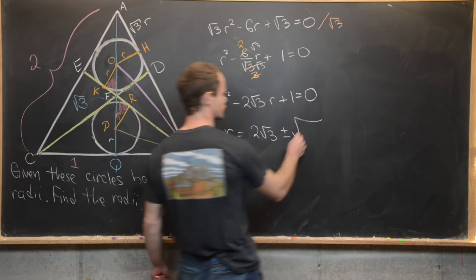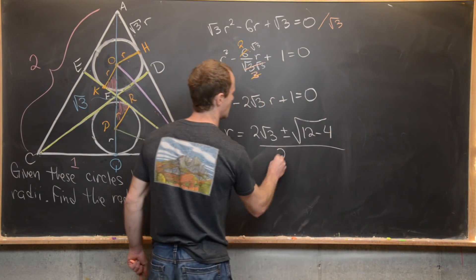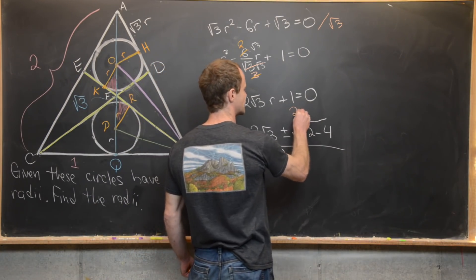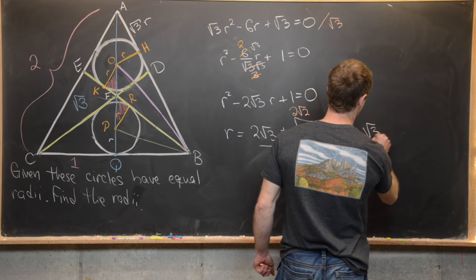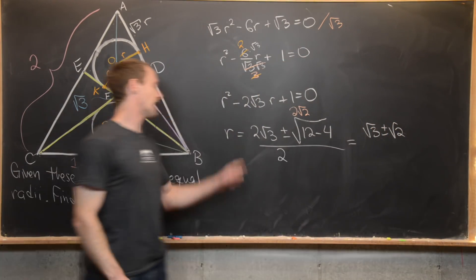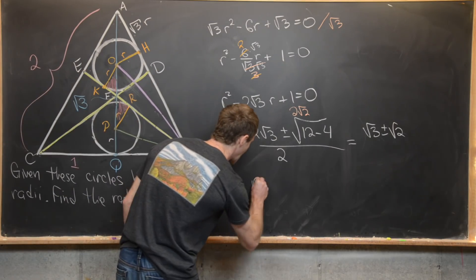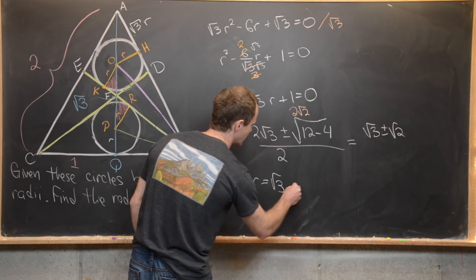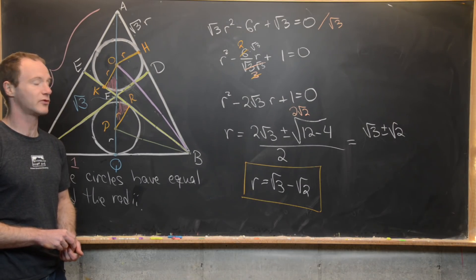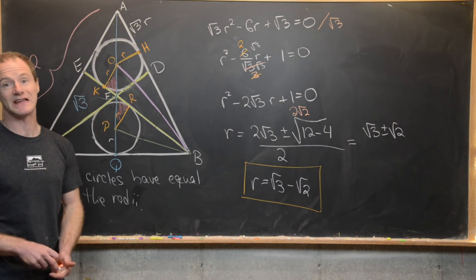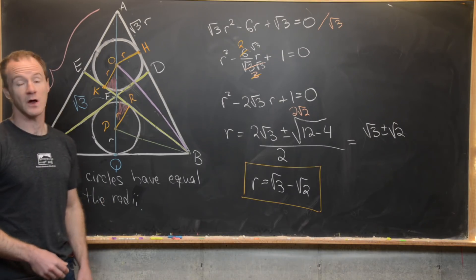We must keep the solution r equals root 3 minus root 2, because if we had two circles of radius root 3 plus root 2, that wouldn't even fit inside this triangle. Maybe post in the comments what kind of geometric picture that larger solution would line up with. Okay, that's a good place to stop.